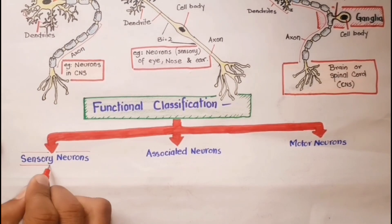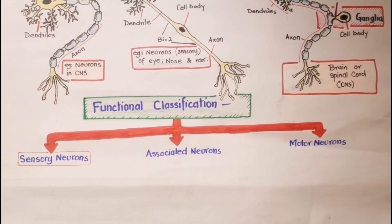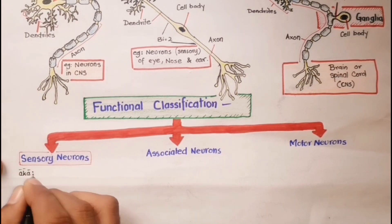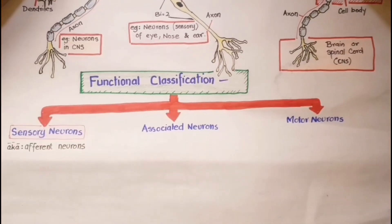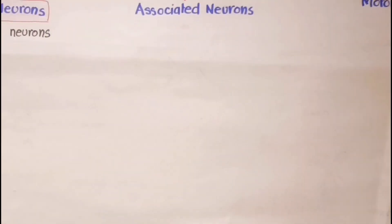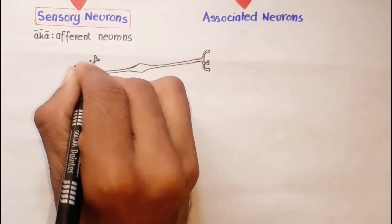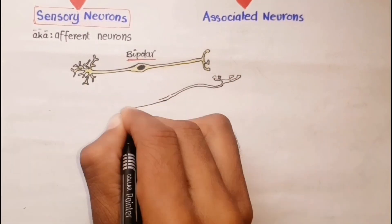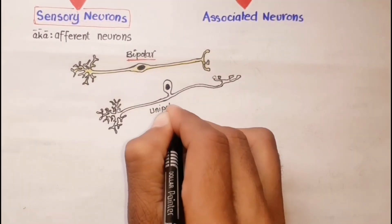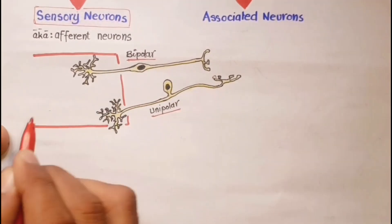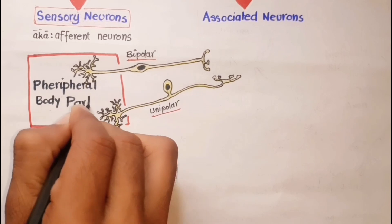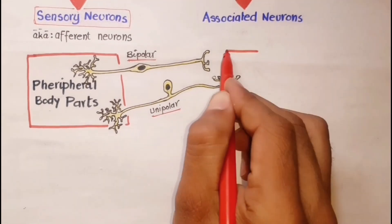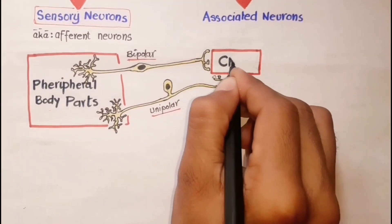Sensory neurons are also known as afferent neurons. Most sensory neurons are unipolar and some are bipolar. Sensory neurons conduct impulses from peripheral sensory body parts into the brain or spinal cord.